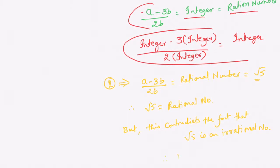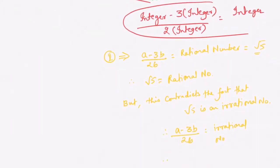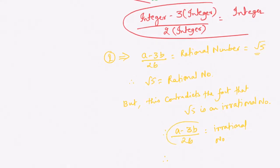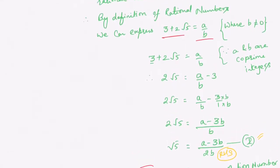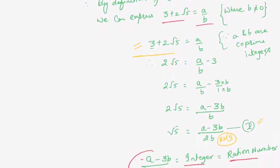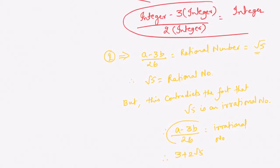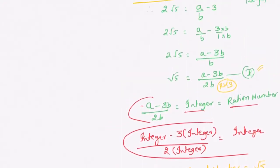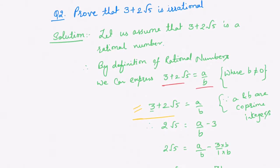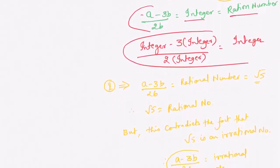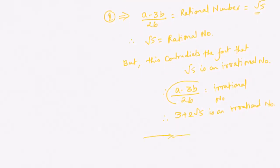This contradiction arises from our assumption. Therefore, 3 plus 2 root 5 is an irrational number. In this way you can prove 3 plus 2 root 5 is an irrational number. Please take a glance at what we have done in the solution. With this we have finished question number 2.